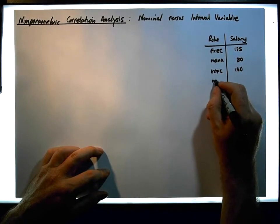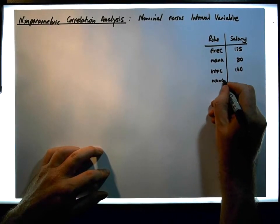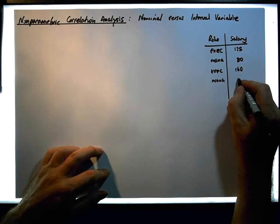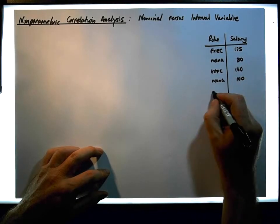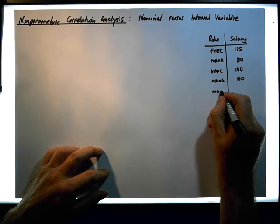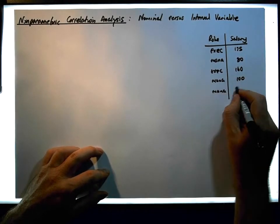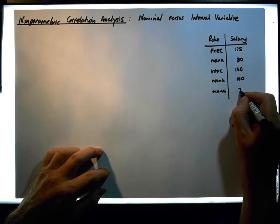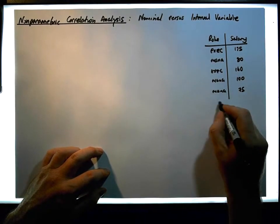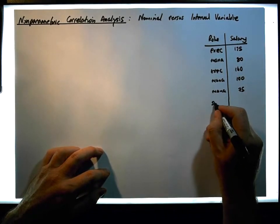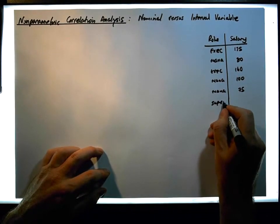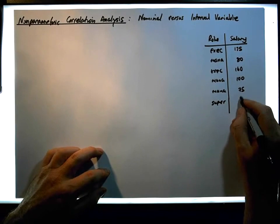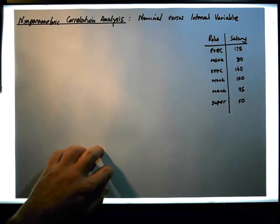The next person measured was a manager who earned 80,000; the next manager earned 100,000; the next manager earned 75,000; and then we had a supervisor who earned 50,000.